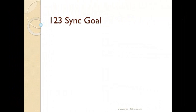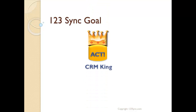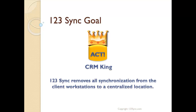A very common question we get about 123Sync is what its goal is. Our answer is we take ACT, which is a very good contact management software, and we make it a king of CRM. We do that by removing all the synchronization from client workstations to a centralized location, and on top of that we add email integration and a much better way to integrate with the world.